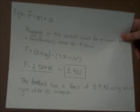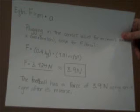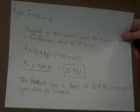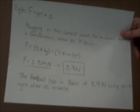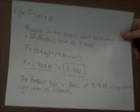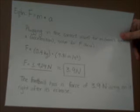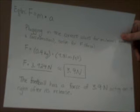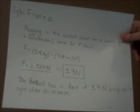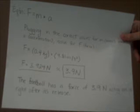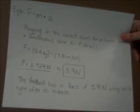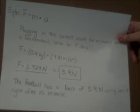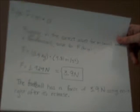Plugging in the correct values for mass and acceleration, we can solve for force. Putting F equal to 0.4 kilograms times 9.81 meters per second squared and multiplying those two values together, we get the force is equal to approximately 3.9 Newtons. Thus, the football has a force of 3.9 Newtons acting on it right after its release.